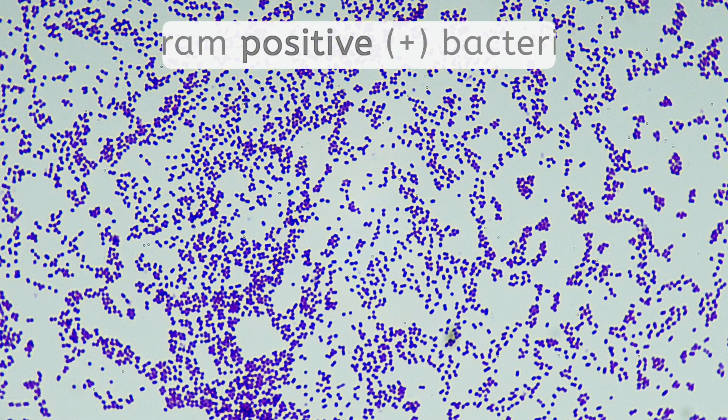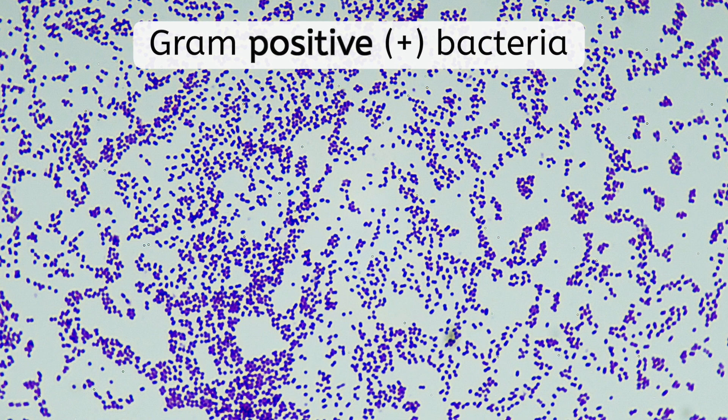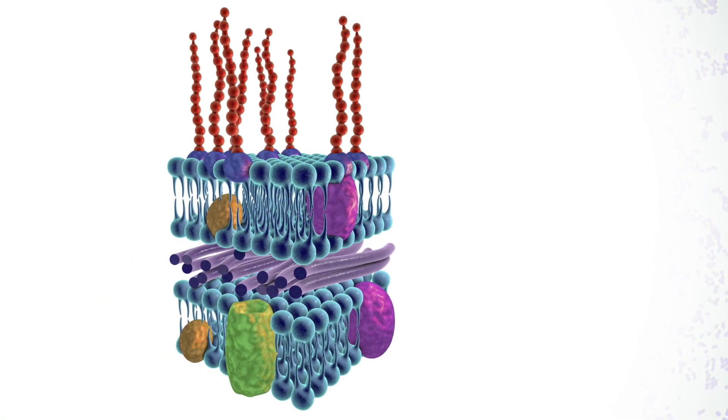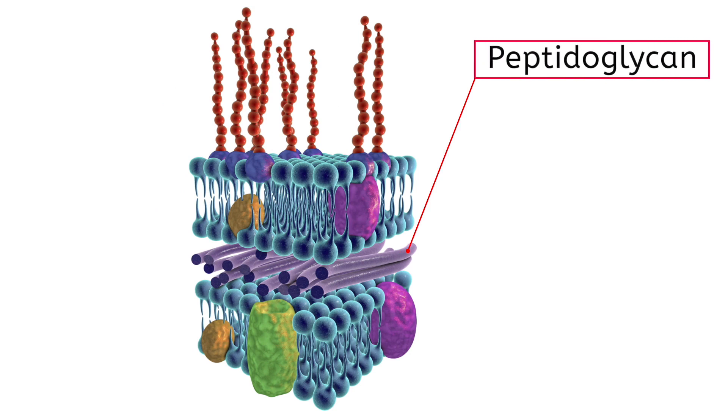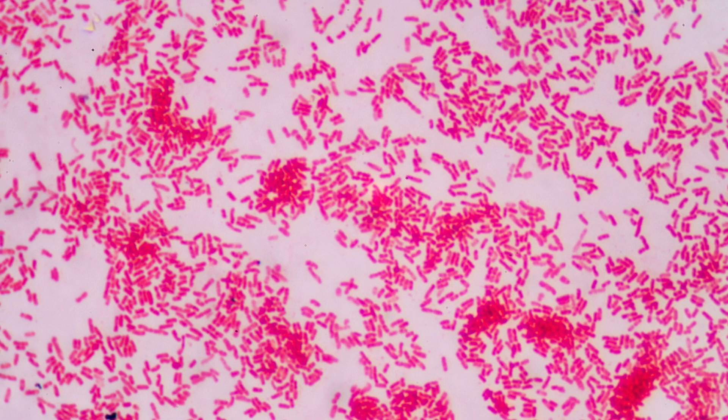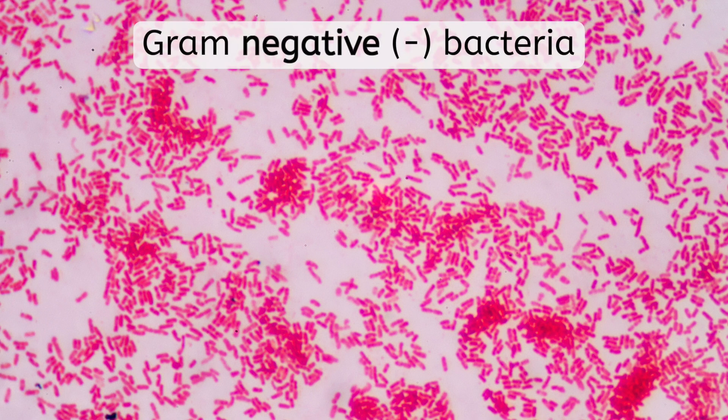Other types of bacteria only have a thin layer of peptidoglycan in the cell wall. As a result, the purple Gram stain washes off, but a later stain that is applied causes them to appear pink under the microscope. These are known as Gram negative bacteria.